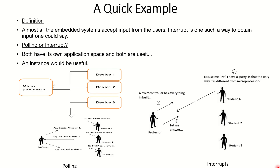Let's understand what is an interrupt. Interrupt is an option or a way through which you can give an input to the system. There are two options available: one is polling, another one is interrupt. Both are equally important — interrupt cannot be kicked out, and polling cannot be kicked out. Both have their own applications.